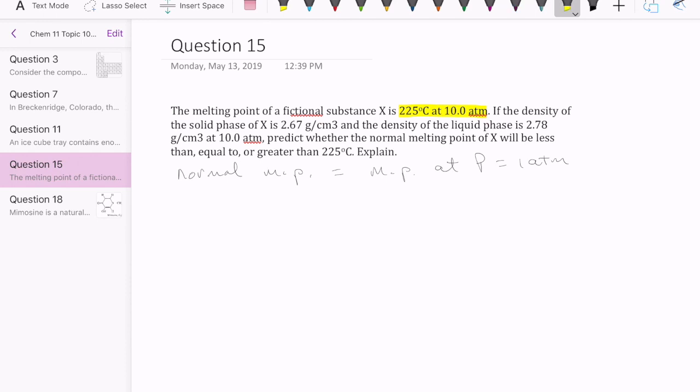The other important piece of information is the density. It tells us that the density at 10 atmospheres for the solid is actually lower than the density of the liquid. This is important because it tells us how to draw the phase diagram.